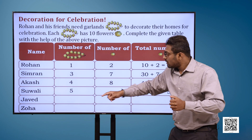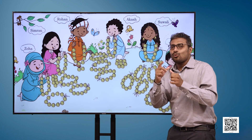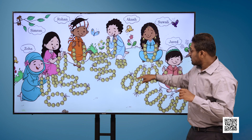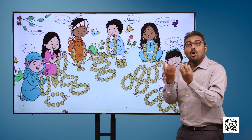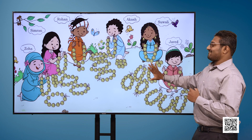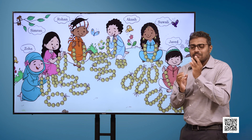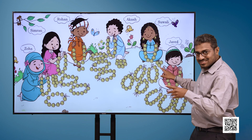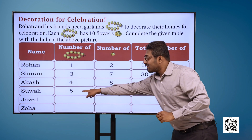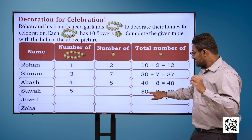Name: Suwali. Number of garlands: 5, number of flowers: blank. Total number of flowers: 50 plus 3, that is 53.